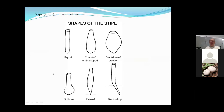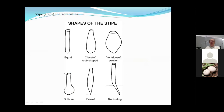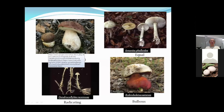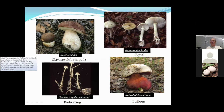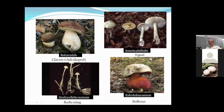The stalk can have many shapes. Most mushrooms have an equal stalk, but some are swollen, bulbous, or club-shaped, like Boletus edulis. The deadly Amanita phalloides has an equal stalk. Rubroboletus satanas, Satan's bolete, has a huge bulbous stalk where the base is as big as or even bigger than the cap. Dendrocollybia racemosa has a stalk covered with tiny little mushrooms and extends way down into the ground — called radicating.